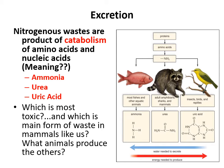To summarize: ammonia is most toxic and used by fish in watery surroundings; urea is our main excretion waste as mammals, balancing low water loss and low energy; uric acid, used by birds, is non-toxic but requires a lot of energy to produce.